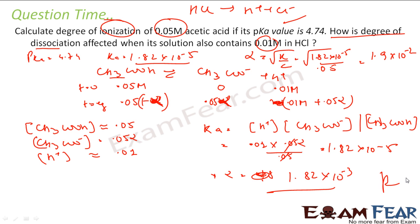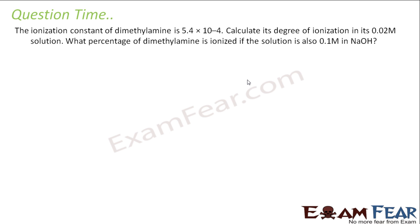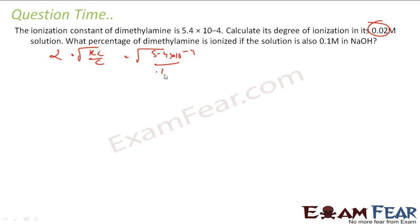So when we started, we already had some hydrogen ion concentration from HCl — that is the common ion effect. Moving to a similar question: the ionization constant Kb is given and we need to find the degree of ionization. Degree of ionization alpha = sqrt(Kb/c) = sqrt(5.4×10⁻⁴ / 0.02), which gives 0.16. This is the degree of ionization.